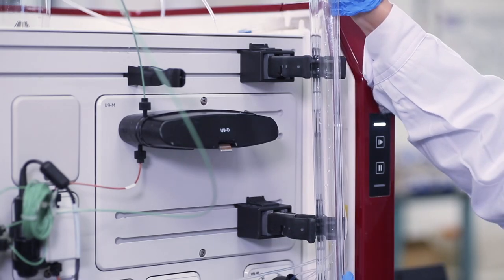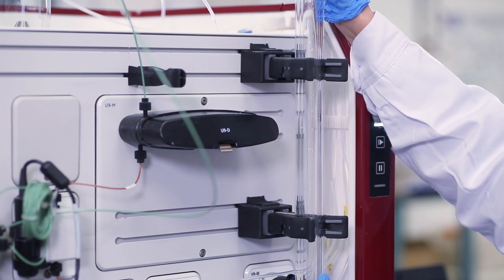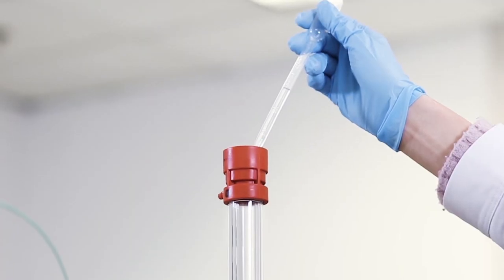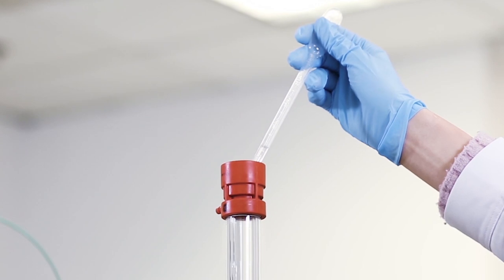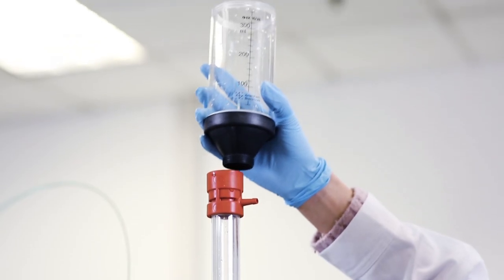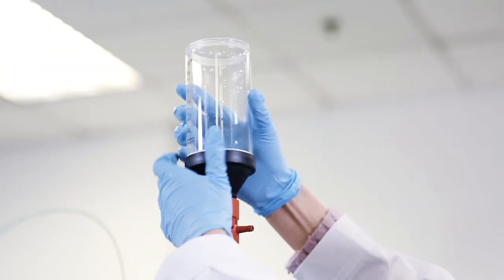Mount the assembly onto the chromatography system. Add 20% ethanol or distilled water into the column to a height of 2 to 3 cm. Attach the packing reservoir and tie it securely.